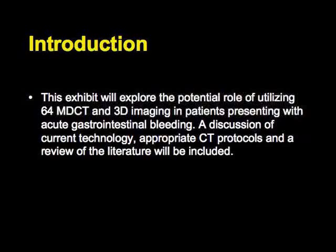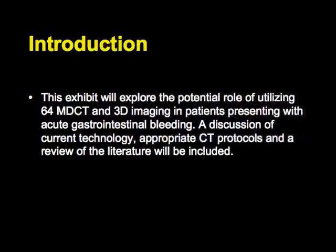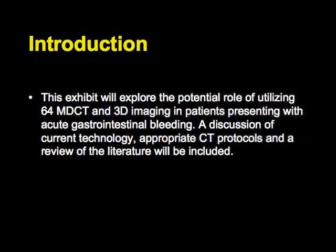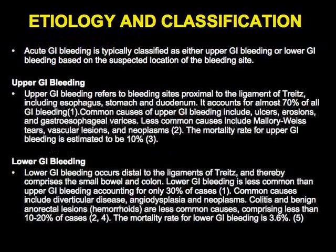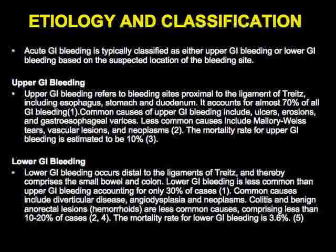Let's talk about GI bleeding for a moment. Upper GI bleeding refers to bleeding proximal to the ligament of Treitz, meaning the esophagus, stomach, and duodenum. It accounts for about 70 percent of all cases of GI bleeding, with a range of causes from ulcers and ulcerations to erosions and varices.